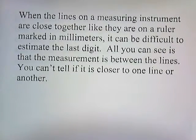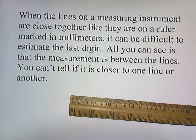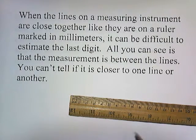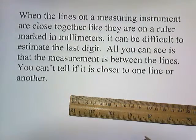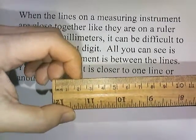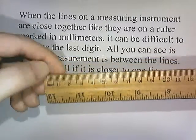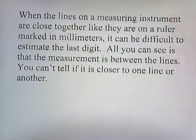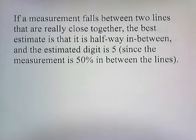When lines on a measuring instrument are close together, like they are on the ruler marked in millimeters, it can be difficult to estimate the last digit. All you can see is that the measurement is in between the lines and you can't tell if it's closer to one line or another. So these lines are pretty close together, and if a measurement fell in between the lines, with my eyesight I wouldn't be able to tell if it was closer to that one or this line over here.